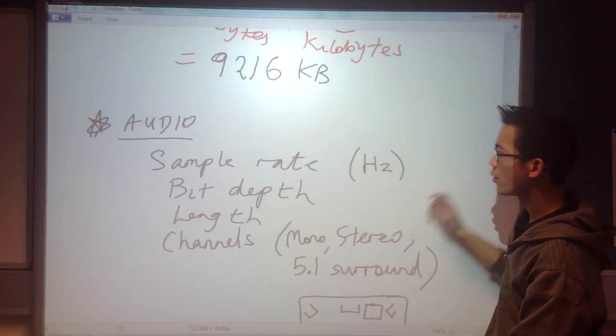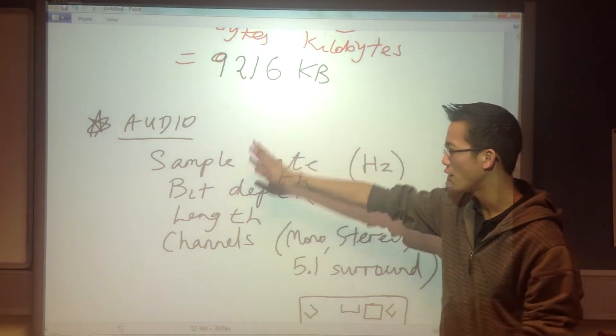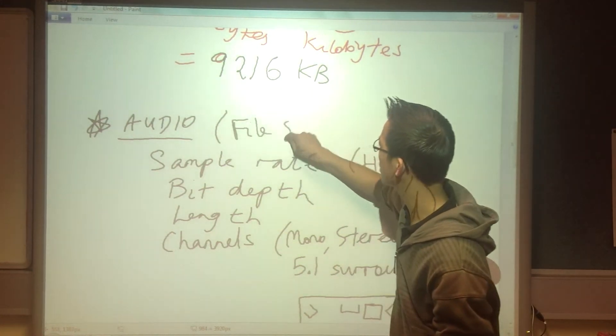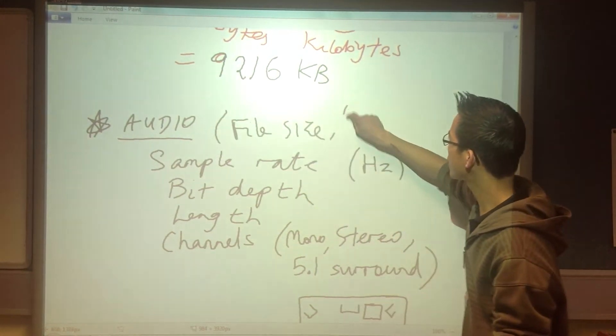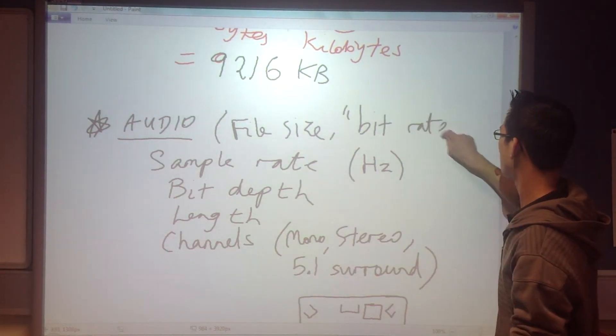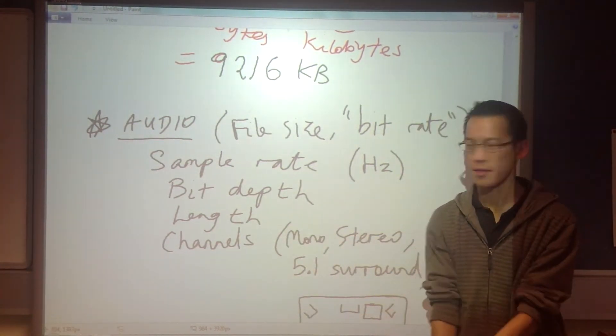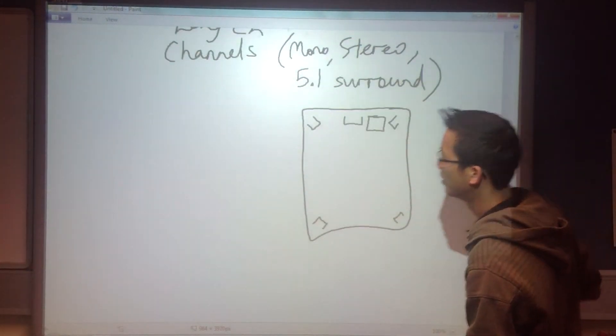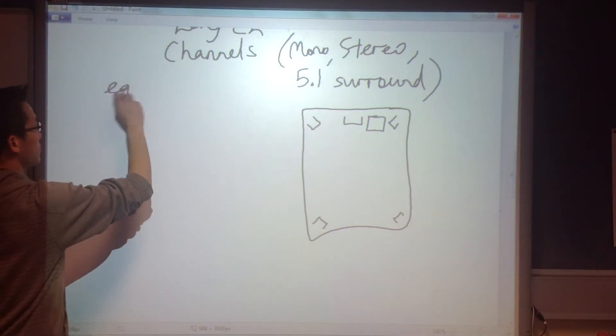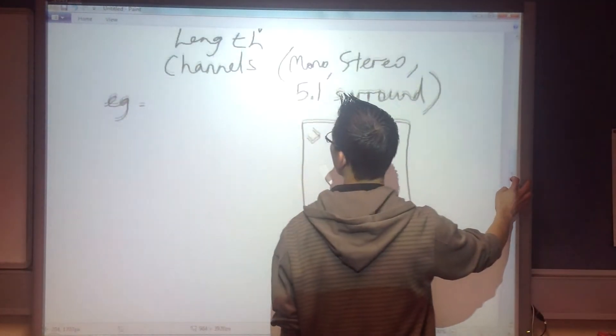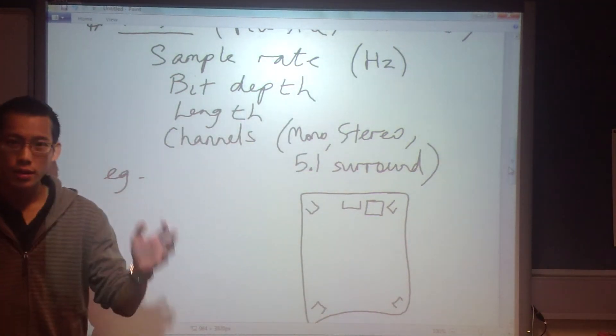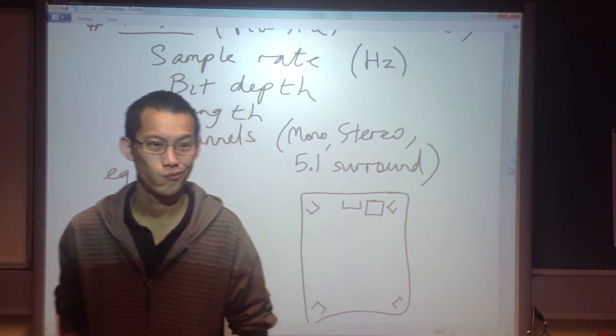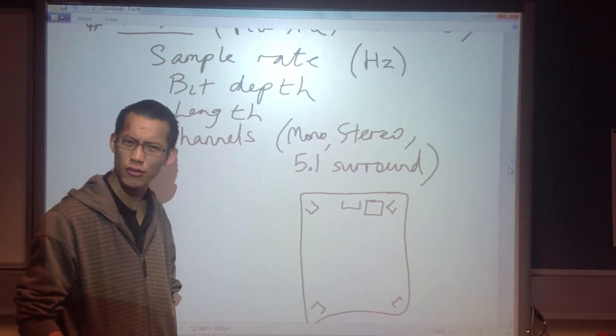Now how do we use that to work out a file size? Well, if we know all of these things we can work out actually not just file size, but sometimes what you will be asked to calculate is called bit rate. Now bit rate, that's a bit confusing. It sounds like bit depth. It's not bit depth. I'll get to bit rate in a second after we deal with file size. So let's consider an example. So a sample rate - does anyone know what's the most common sample rate out there? Do you remember this? It's a really strange random number.